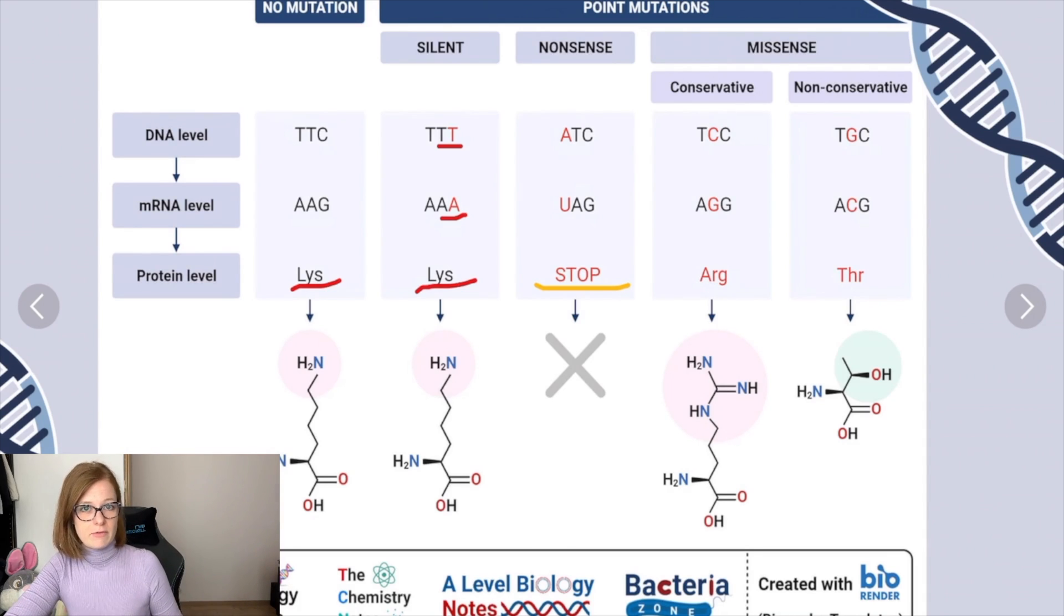The third type is a missense type of point mutation which codes for different amino acids and can be further split into two categories: conservative point mutations and non-conservative point mutation.